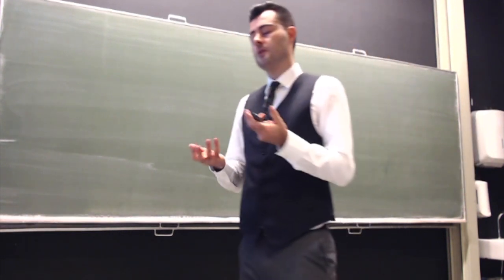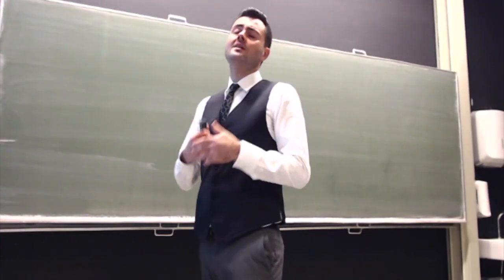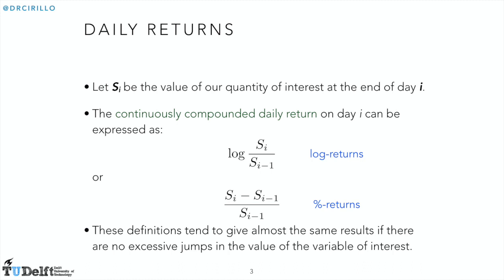We start with dealing with market risk, so that will be the first big risk we will play with together. Let's say something about daily returns. I call S_i the value of the quantity of interest — for example, the price of my asset at the end of day i, the closing price. The continuously compounded daily return on day i can be expressed in two ways: log returns, where we take log of S_i over S_{i-1}, or percent returns, which is the difference between today and yesterday over yesterday.